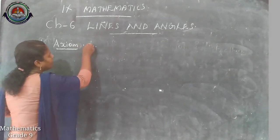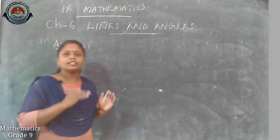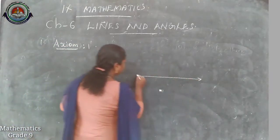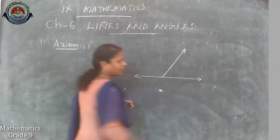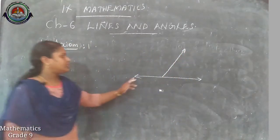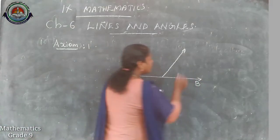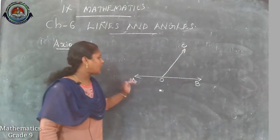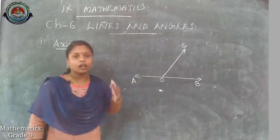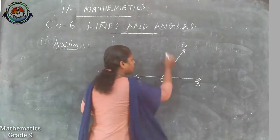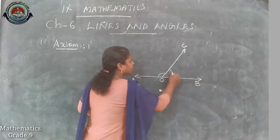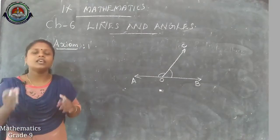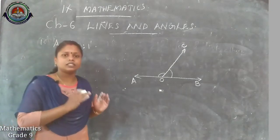Our first axiom is Axiom 1: if a ray stands on a line — suppose AB is a line and the ray OC is standing on the line OB — then we have two adjacent angles, AOC and COB. The sum of adjacent angles so formed is 180 degrees. That is our first axiom.